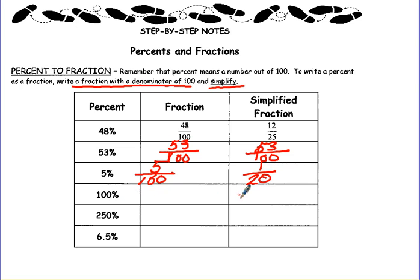100% would just be 1, so 100 out of 100, and 250% would be 250 over 100. In simplified form would be 2 and 50 hundredths. You can simplify even further and you get 2 and 1 half.